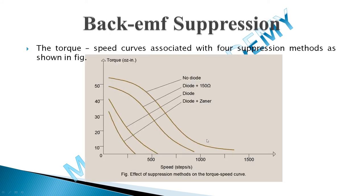This comparative graph shows the torque-speed and current characteristics associated with the three suppression methods. Without any suppression, you get maximum torque; with diode plus resistance, torque is somewhat less; and with diode plus Zener diode, though it damps faster, torque at a particular speed may be the least. Each method has its own advantages and disadvantages, as seen from the graph.